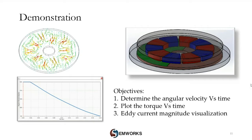Let me begin the technical part by going over two separate classes of problems in eddy current braking. One class deals with rotary-type braking — systems like machinery where there is rotational motion. If you need to decelerate or stop that rotational motion, rotary eddy current braking systems are widely employed. I will show you a demonstration of a typical system where we use a combination of magnets to stop a rotating conductor.